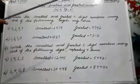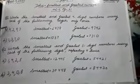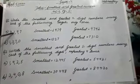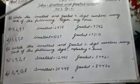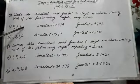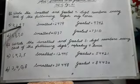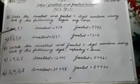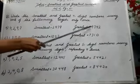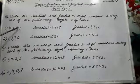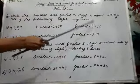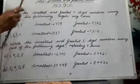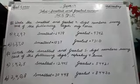Now look at the first part — digits are given. We first form the smallest number: which is smallest? 2. Write 2 first, then 4, then 7, last one is 9. Write 9 in the last place. Now write the greatest number: which is greater? 9. Write 9 in the first place. Next greater among 4, 2, 7 is 7. Write 7, then 4, last one is 2. Write 2 in the last place.